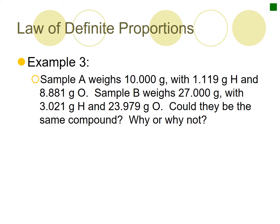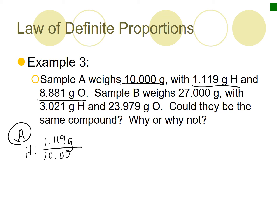The problems we're going to expect you to do in class involve comparing two different samples and identifying whether they could be the same substance. All you need to do is find the percentage of each element in the sample — if they're the same, they could be the same compound; if not, they are not the same substance. For substance A, we have a 10-gram sample where hydrogen is 1.119 grams and oxygen is 8.81 grams. For hydrogen, we take 1.119 grams over 10.00 grams, multiply by 100, and get 11.19%.